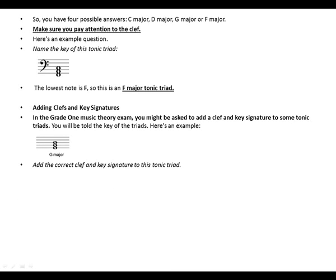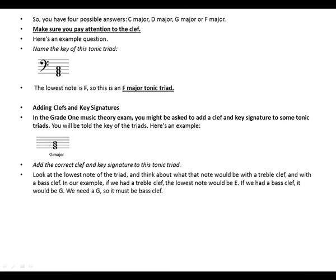Add the correct clef and key signature to this tonic triad. Look at the lowest note of the triad and think about what that note would be with a treble clef and with a bass clef. In our example, if we had a treble clef, the lowest note would be E. If we had a bass clef, it would be G.